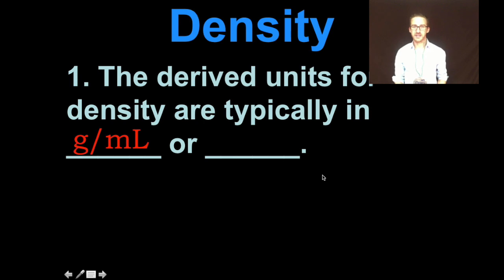Now, the derived units for density are typically grams per milliliter or grams per cubic centimeter, although they can be any mass per volume unit. These are just the ones you are most often going to see in class.